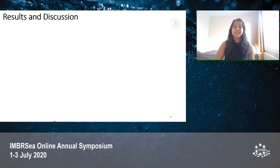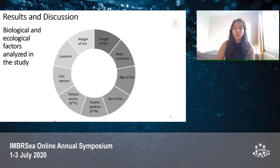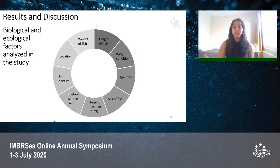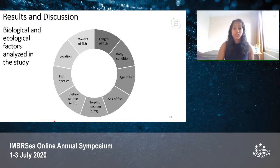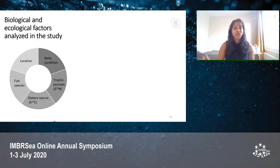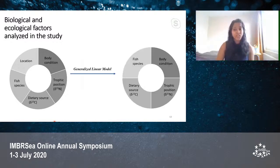Coming to our results and discussion: we analyzed nine biological and ecological factors, starting with biometrics — weight, length, body condition calculated by Fulton's condition factor, followed by age and sex. We also had dietary descriptors delta-13C and delta-15N, followed by fish species and location. From the correlation matrix, we found a very high correlation between weight and length, and between length and trophic position. Since weight and length were already used to calculate body condition, and since trophic position was an important factor, we excluded weight and length from our statistical study. Age and sex were also excluded due to a lack of a complete dataset. Our final factors were used to run generalized linear models. The model showed that fish species, body condition, trophic position, and dietary source explain mercury variations the most.